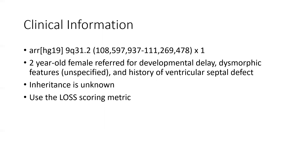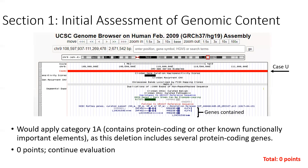Since this is a deletion, we are going to use the loss scoring metrics. First, you are directed to look at Section 1 — the initial assessment of genomic content. In this screenshot, our case is depicted with a red bar, and you can quickly see that there are a number of protein-coding genes in the region. Because of that, we would apply Category 1A — this includes several protein-coding genes — but it's worth zero points, and we just continue on with our evaluation.